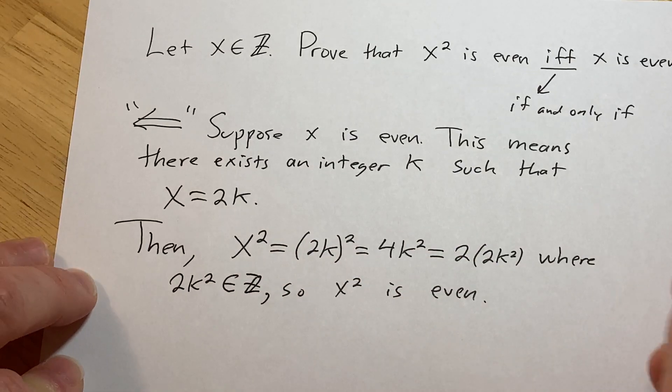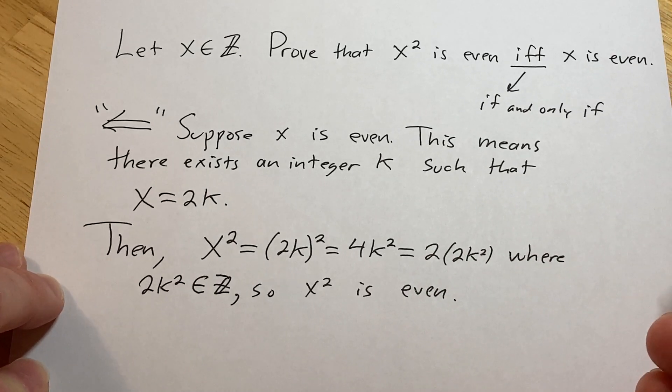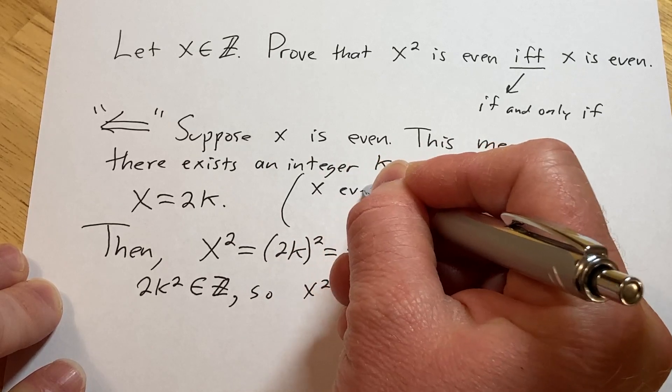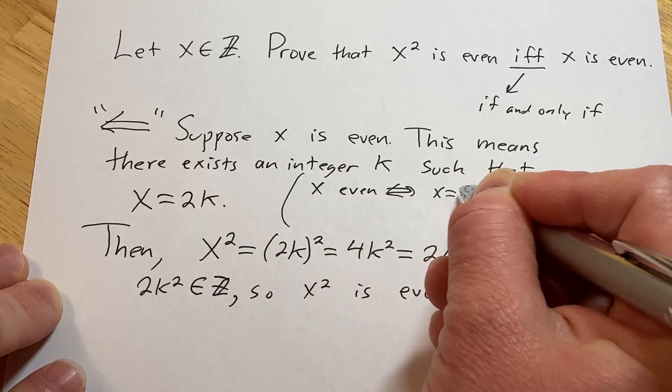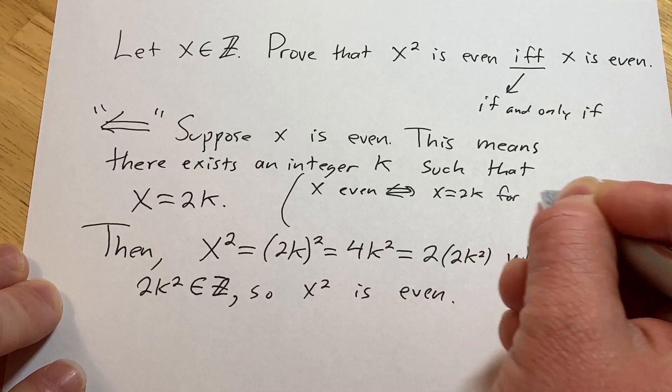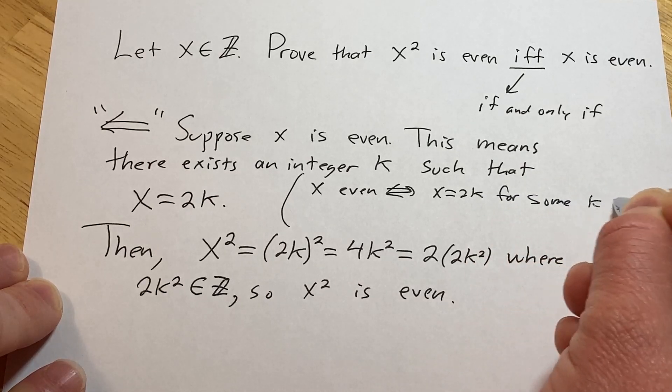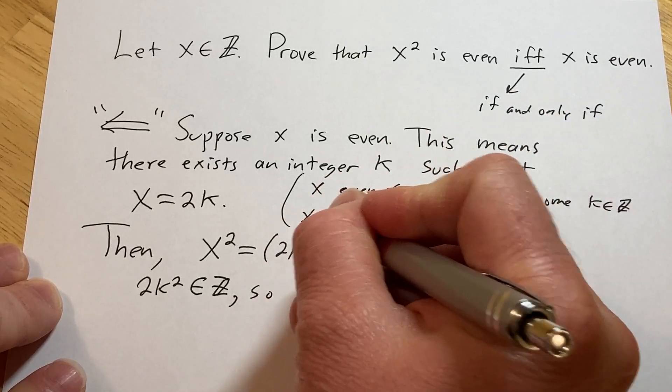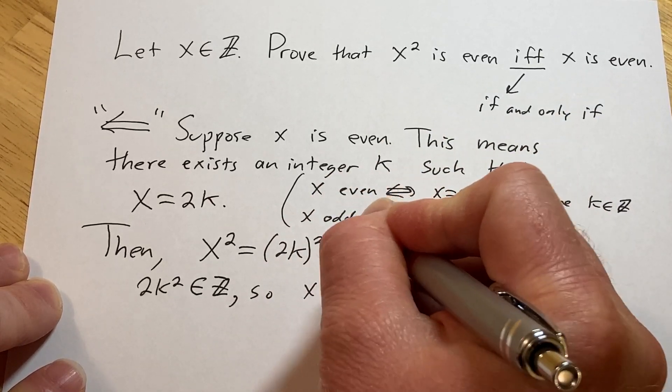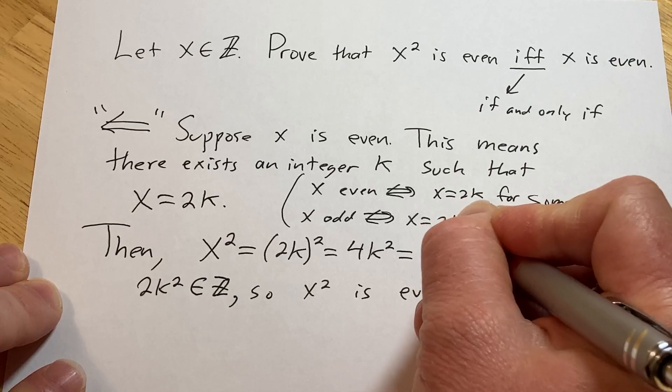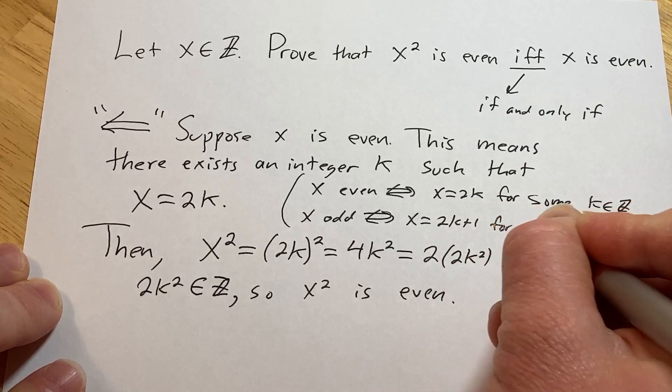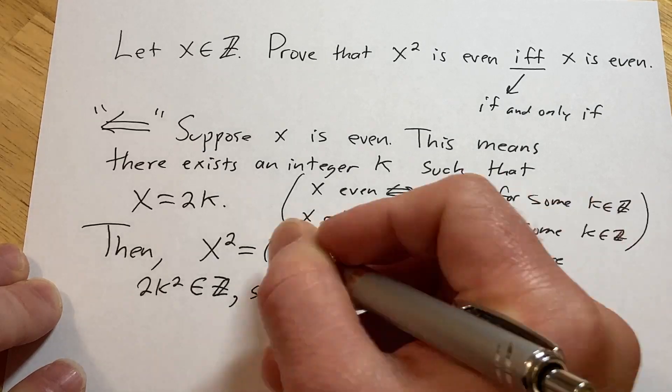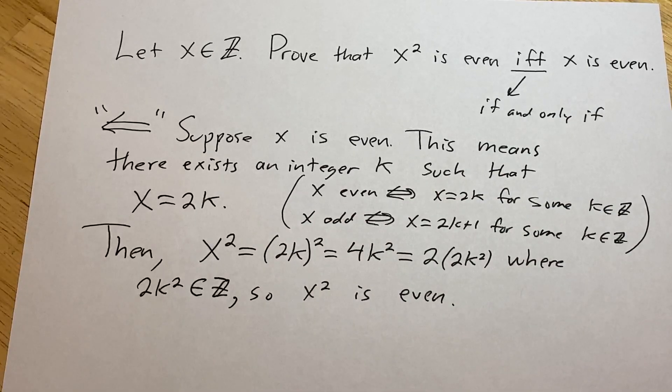And again, very important to know the definition of even, I probably should have written it down at the beginning of the proof, but x even is equivalent to saying x equals 2k for some k in Z. Likewise x odd is equivalent to saying x equals 2k plus 1 for some k in Z. That's the definition of even and odd in mathematics.